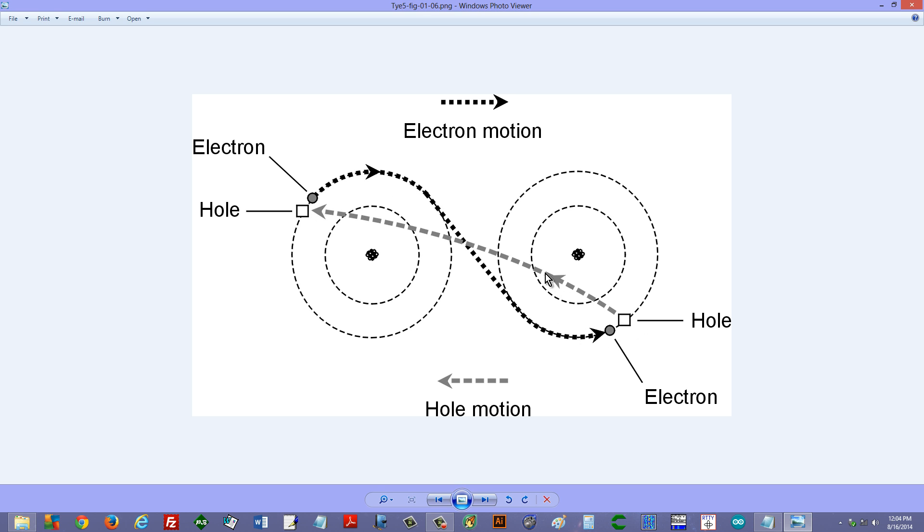Holes notice flow from atom to atom, or jump from atom to atom, in a direction opposite the direction of the electrons. So electrons flow from minus to plus, like this, and holes move from plus to minus. Now remember, holes are not really actual particles. They are simply absences of electrons within atoms.